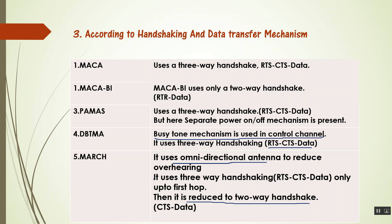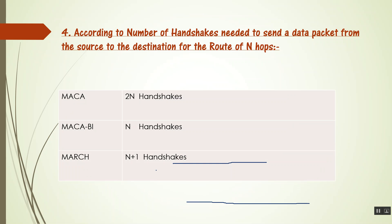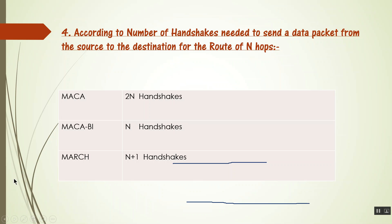There is another difference based on the number of handshakes needed to send a data packet from source to destination over a route of n hops. In MACA, the number of handshakes needed is 2n. In MACA-BI, n handshakes are needed over a route of n hops. In MARCH, n plus 1 handshakes are needed.